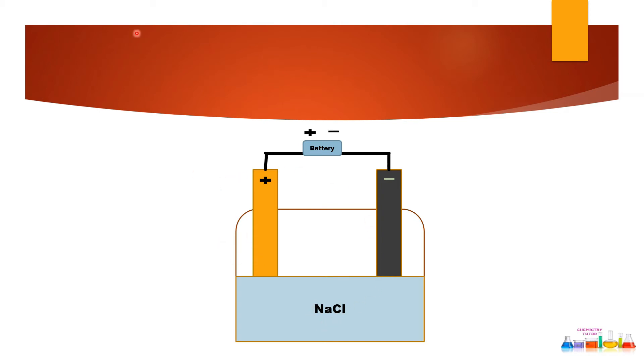Now as the electricity will pass through this battery, this electrolyte which is NaCl, it will be converted into sodium positive and chlorine negative ions. So in this way, all the electrolyte will be converted into positive and negative ions.